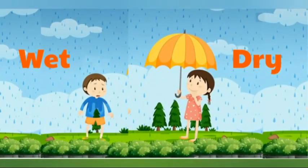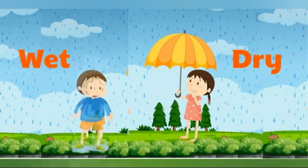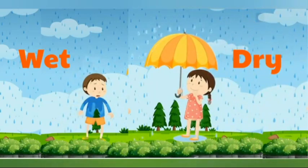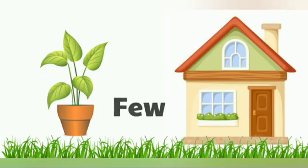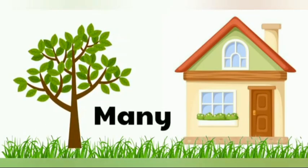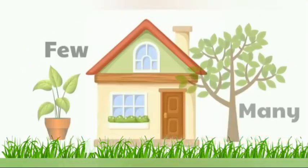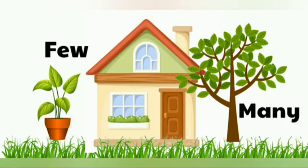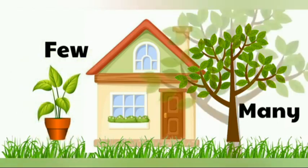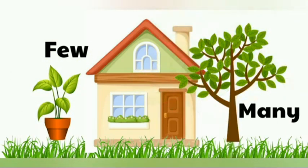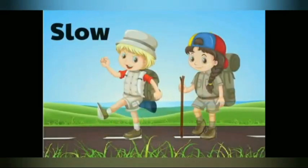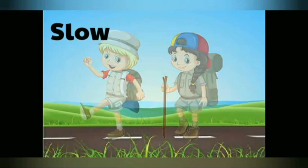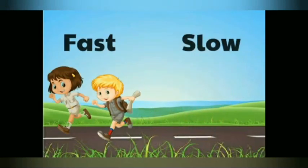Wet and dry — the boy is wet, the girl is dry. Few and many — there are few leaves in a sapling, there are many leaves in a tree. Fast and slow.